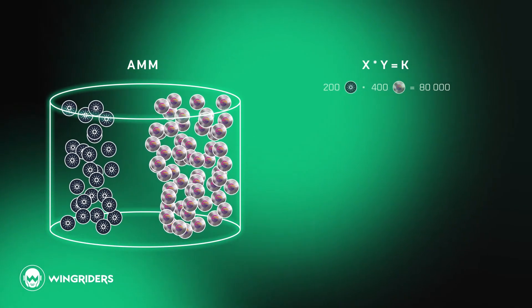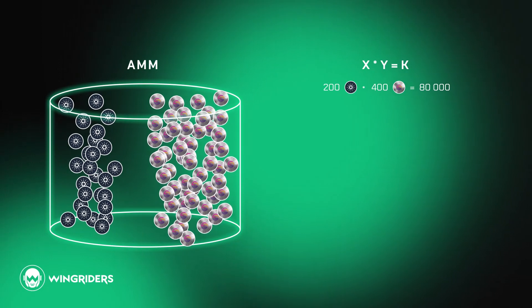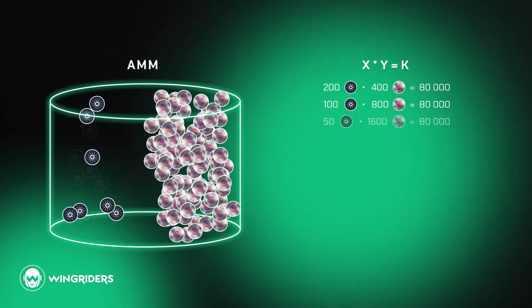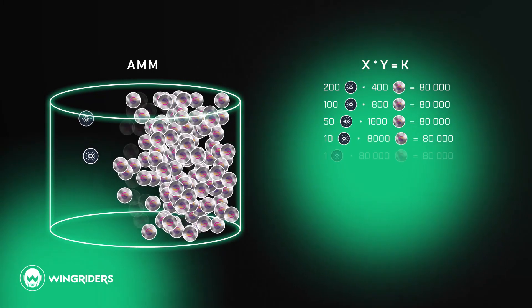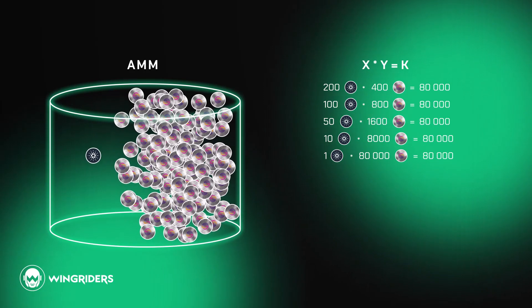This way, the fewer ADA remains in the pool, the more WMT it costs to buy. Even if it gets down to very little, the price of it goes up exponentially. Therefore, the pool basically never runs out of it.